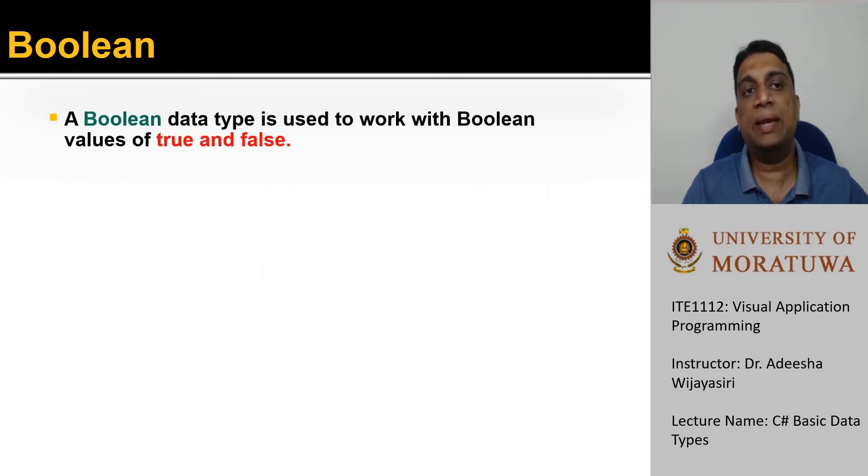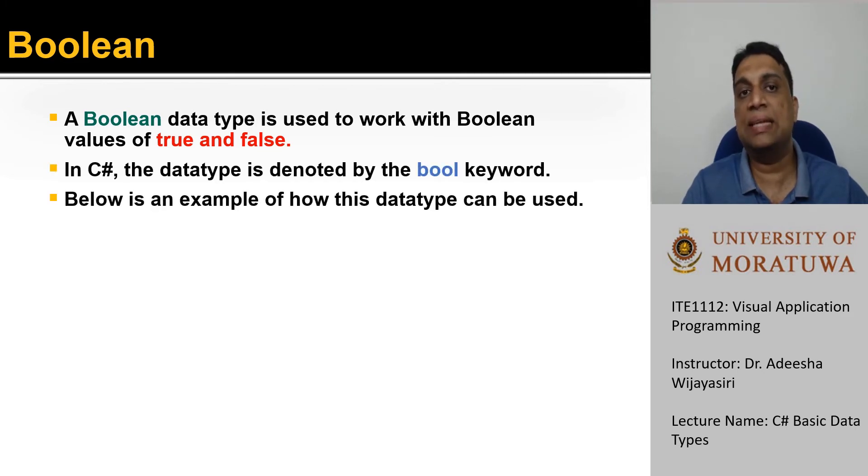Boolean is another data type that we have in C sharp and it is used to represent Boolean values of true and false. An example of the usage type is given in this statement. Here the variable status is a type of Boolean and false is assigned as its value.